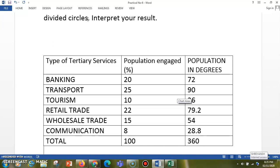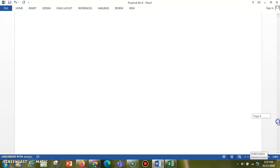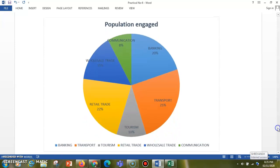You can see that after implementing it, the circle which is generated is going to look like that. By this you can conclude that highest proportion is covered by transportation, that is 25%, and minimum is covered by communication, that is 8%. So this is what you can conclude with the help of divided circle.